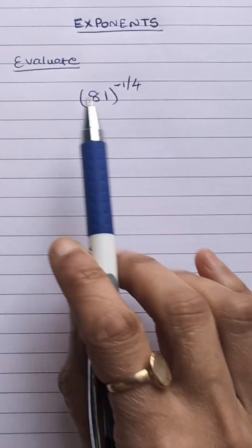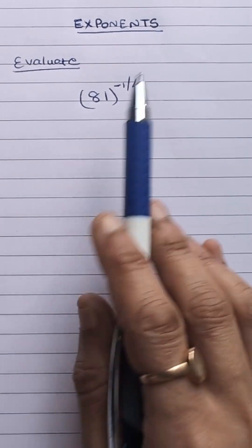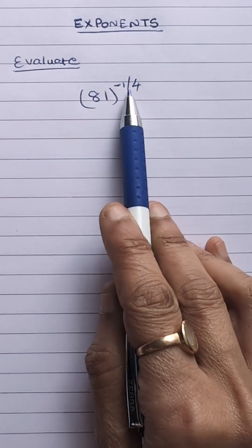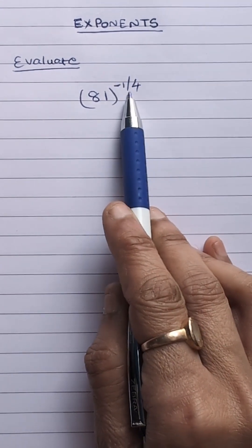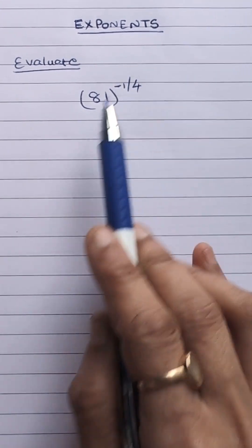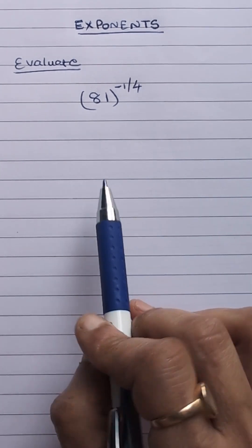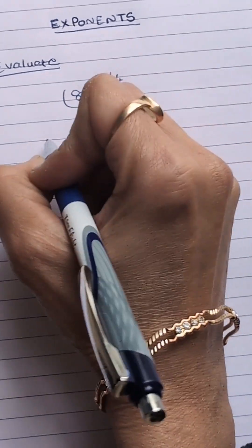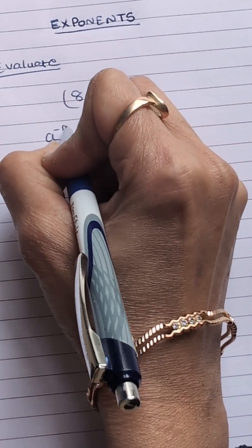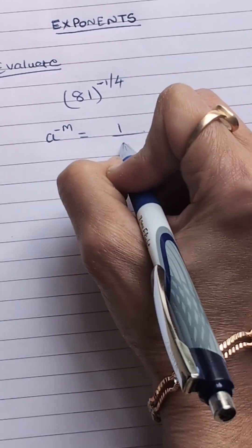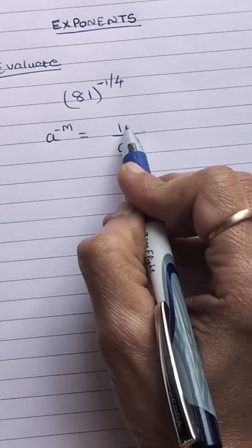We have to evaluate this. Now in exponents, always remember if the power or the index is negative, we have to make it positive. So negative power ko positive banane ke liye kya karna hai, we have to use this law of exponents: a to the power minus m is 1 upon a to the power m, or 1 upon a to the power minus m is a to the power m.